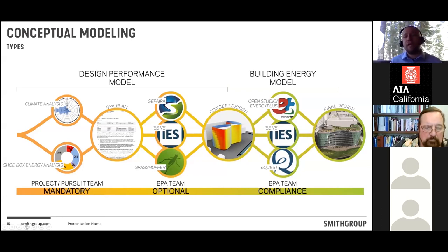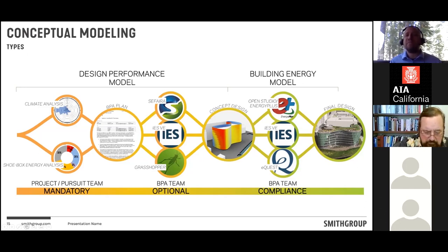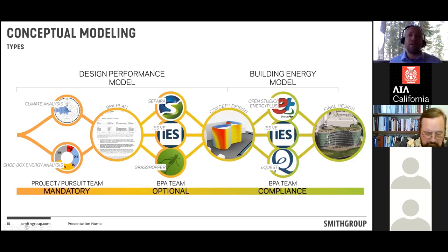The Building Performance Analysis Plan varies significantly by building type: a hospital is heavily driven by process loads, ventilation loads, and cooling, so modeling there differs from a K–12 school, higher-ed building, or office. These plans are developed in collaboration with the building owner's project requirements — it's an iterative, parallel process. The appropriate tool is then selected to satisfy the questions identified: from early concept modeling in Sefaira, to IES VE and IES Core, to scripting in Dynamo, Rhino, Grasshopper, and Honeybee.